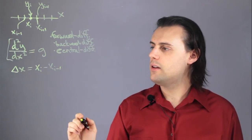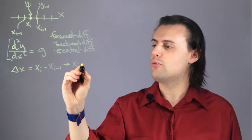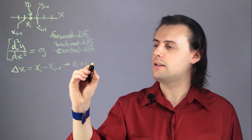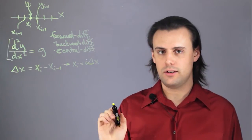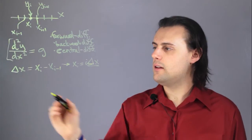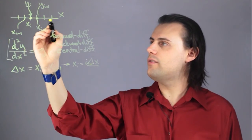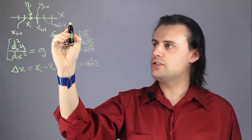Where x sub i will be equal to i times Δx, where i is an integer and this is some finite value. So if we have our Δx here, this is typically just called h in finite difference algorithms.